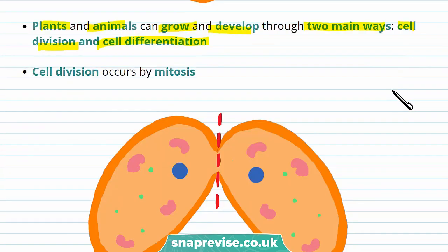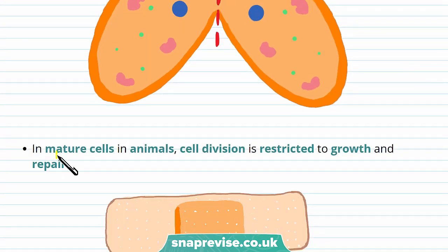Cell division occurs by mitosis. This is when body cells divide to produce two daughter cells that are genetically identical to the parent cell. In mature cells in animals, cell division is restricted to growth and repair. Animals tend to grow quickly when they're young and then reach full growth and stop. When you're young, cell division is at a much greater rate, but once you're an adult, mostly cell division is for repair — to replace old or damaged cells.